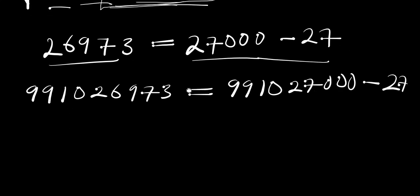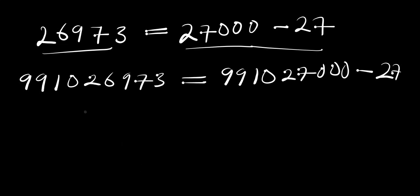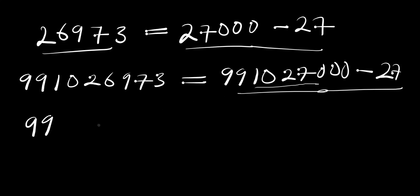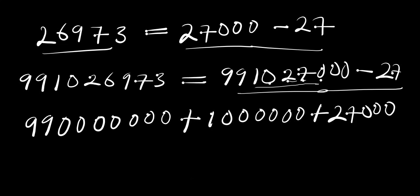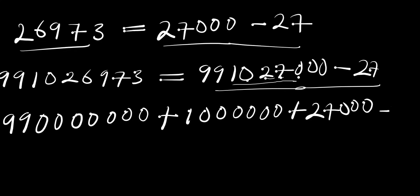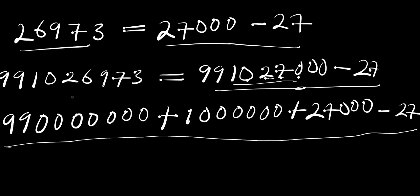Now the next thing we are going to do is simply replace these numbers with zero digits. So we are going to have 9,910,000,000 — that is seven zeros — plus the component for 27,000 minus 27. If you add up everything right here you are definitely going to get this number again.